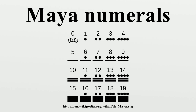If there are not enough dots in a minuend position, a bar is replaced by five dots. If there are not enough bars, a dot is removed from the next higher minuend symbol in the column and four bars are added to the minuend symbol which is being worked on.